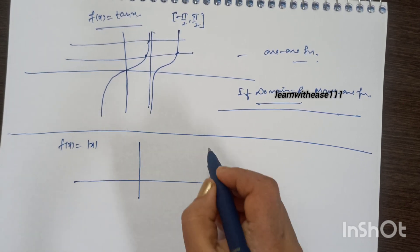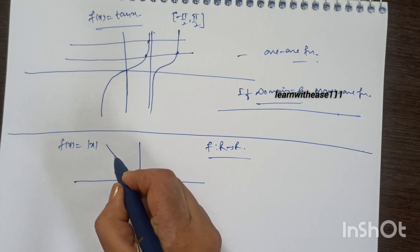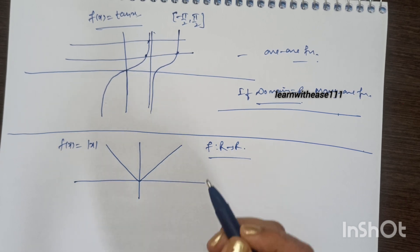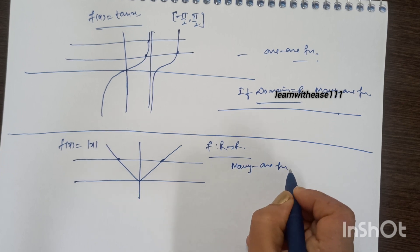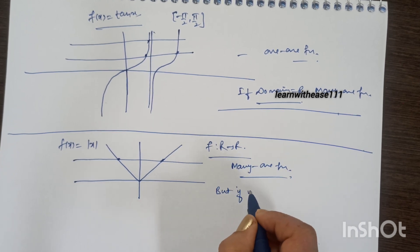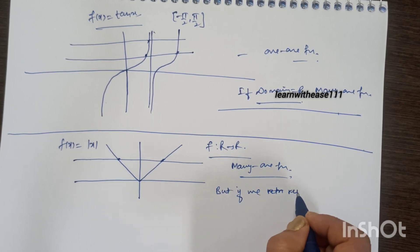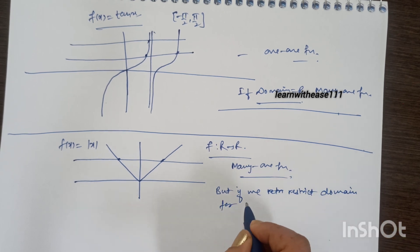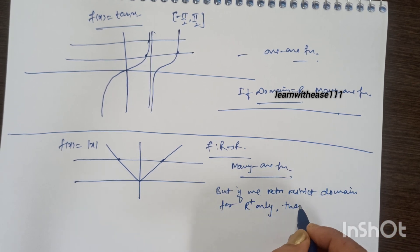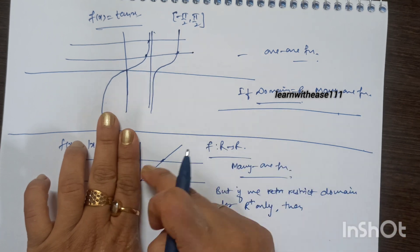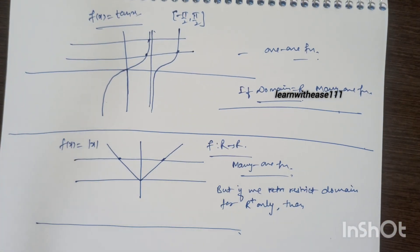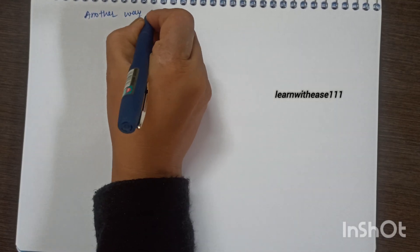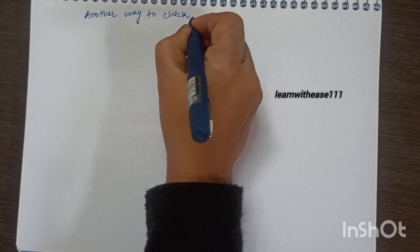Another example: f(x) = |x| defined from real to real. Its graph spans the first and second quadrants, and a horizontal line cuts it at more than one place, so it is many-one. But if we restrict the domain to positive reals only, only the first quadrant portion is visible, and in that case the function becomes one-one.